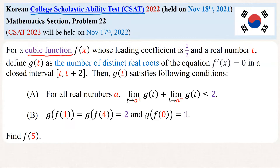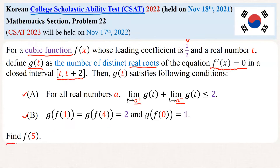For a cubic function f(x), whose leading coefficient is 1/2, and a real number t, define g(t) as the number of distinct real roots of the equation f'(x) = 0 in the closed interval [t, t+2]. Then g(t) satisfies the following conditions. Condition (a): for all real numbers a, the limit of g(t) as t approaches a from the right, plus the limit of g(t) as t approaches a from the left, is less than or equal to 2. Condition (b): g(f(1)) = g(f(4)) = 2 and g(f(0)) = 1. Then find f(5).